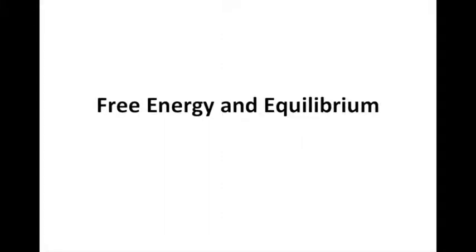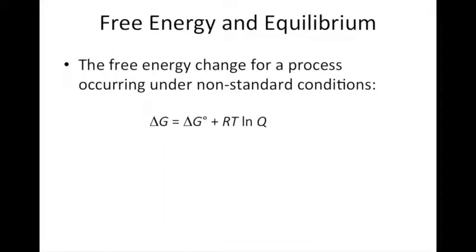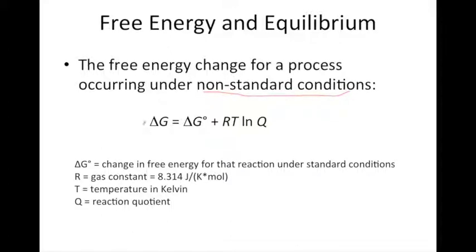In this video we're going to analyze the relationship between free energy changes and equilibrium. The free energy change for a process that occurs under non-standard conditions can be expressed by the equation where ΔG° is our standard free energy change, R is the gas constant, T is our temperature in Kelvin, and Q is our reaction quotient.